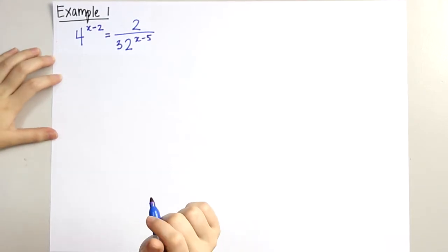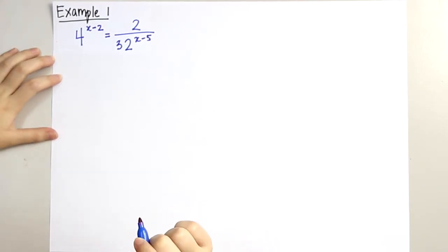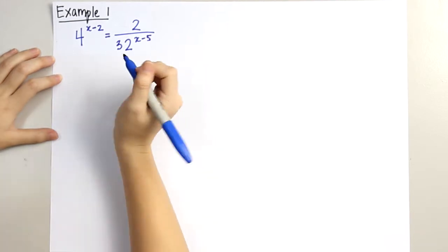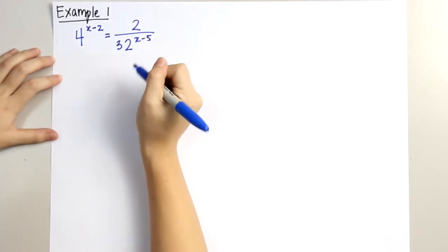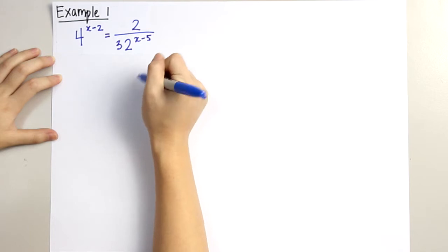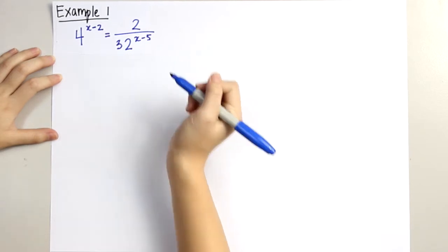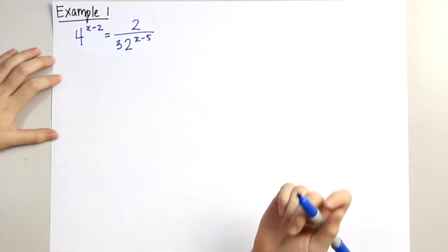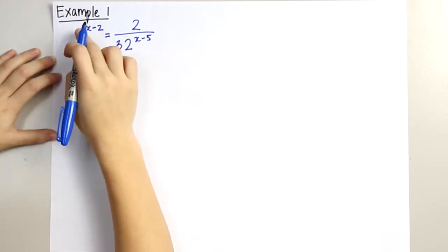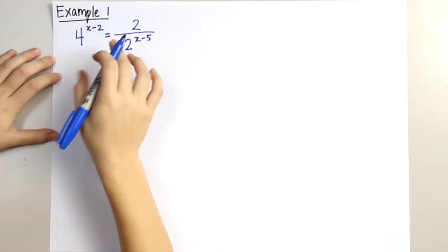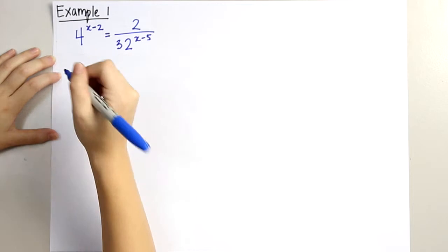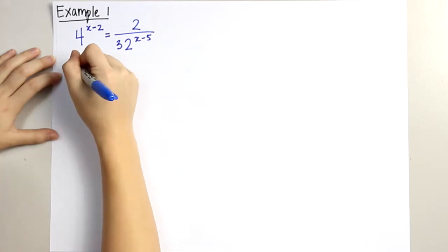We'll do a few examples for our logarithms. The first question is 4 to the power of x minus 2 equals to 2 over 32 to the power of x minus 5. For this sort of question, we'll change all three numbers to the same base. For 4, 2, and 32, the same base will be 2.